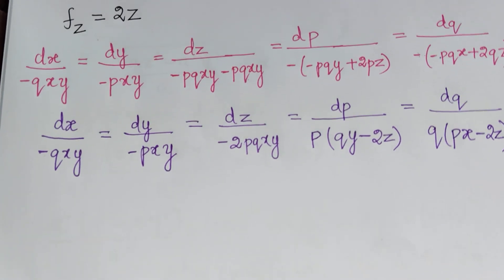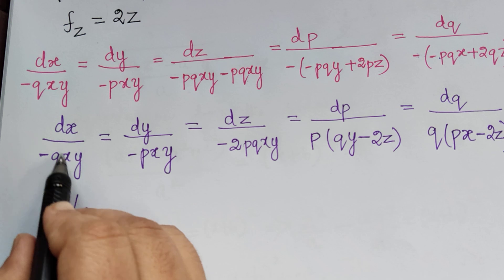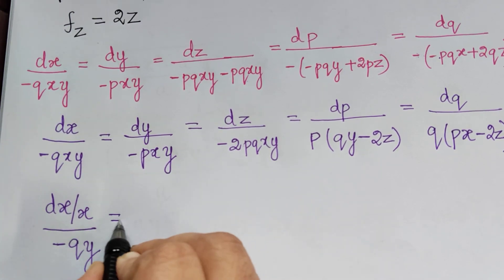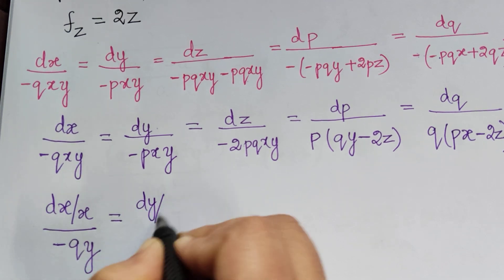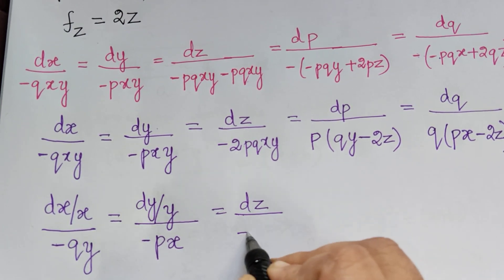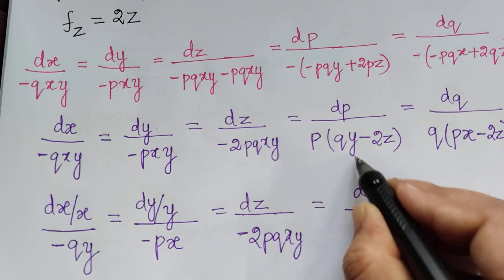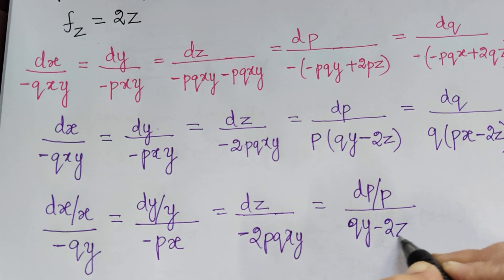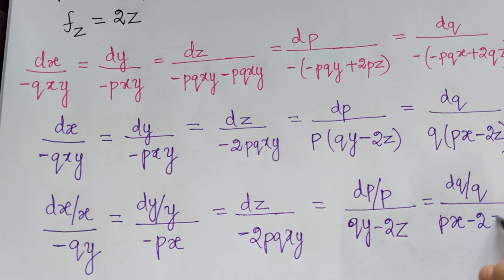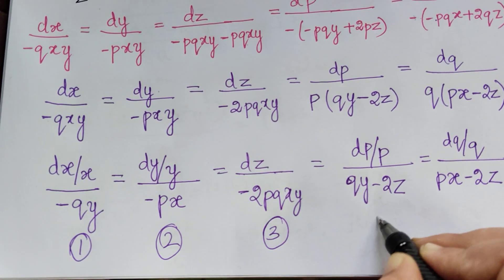Rewriting for convenience: (dx/x)/(−qy) = (dy/y)/(−px) = dz/(−2pqxy) = (dp/p)/(qy − 2z) = (dq/q)/(px − 2z). These are marked as ratios 1, 2, 3, 4, and 5.